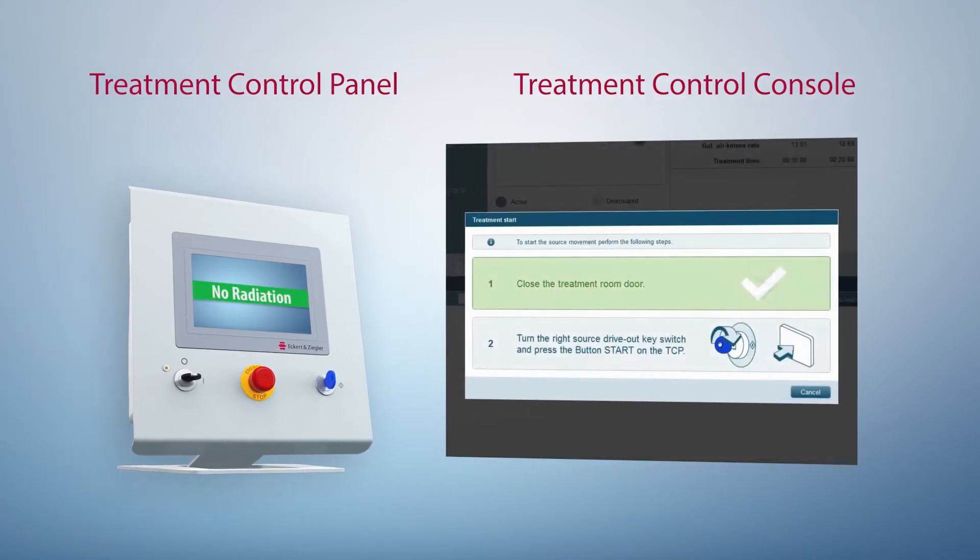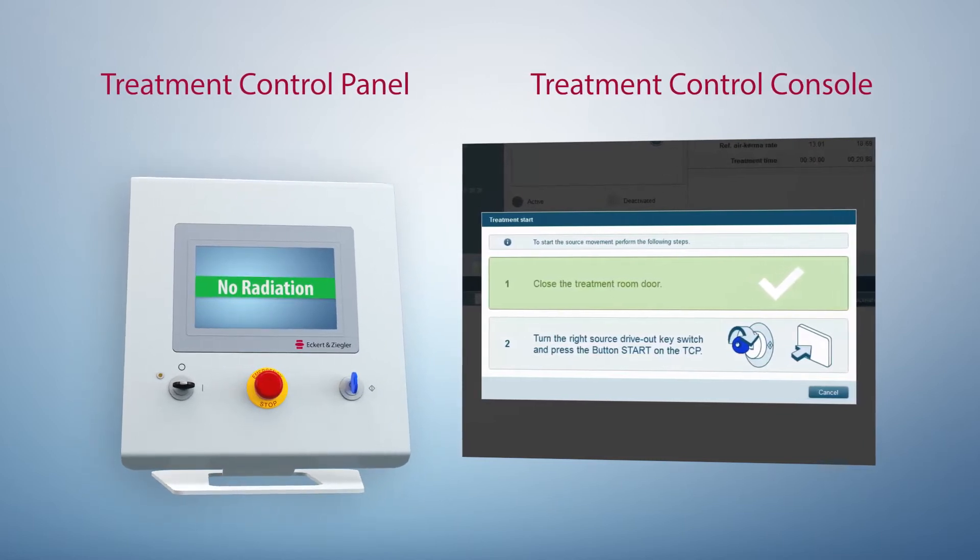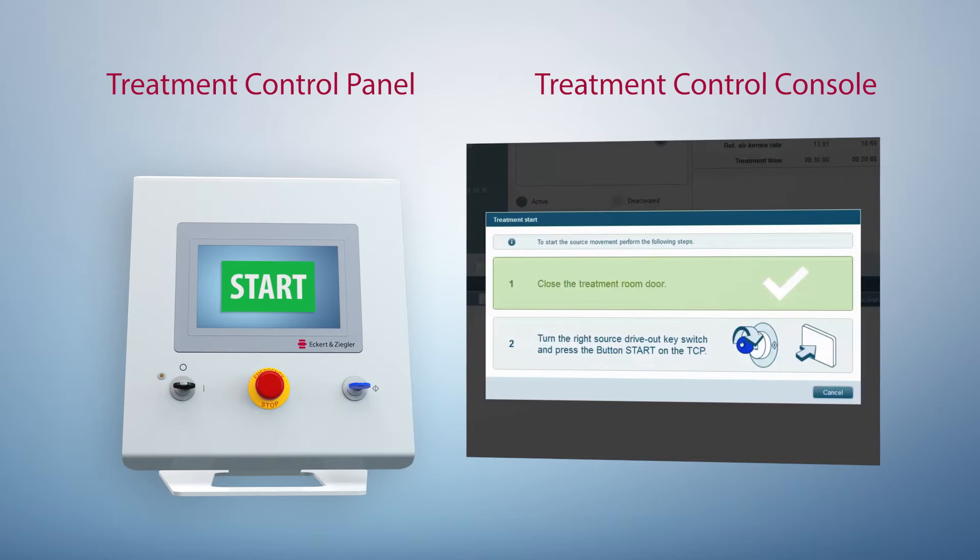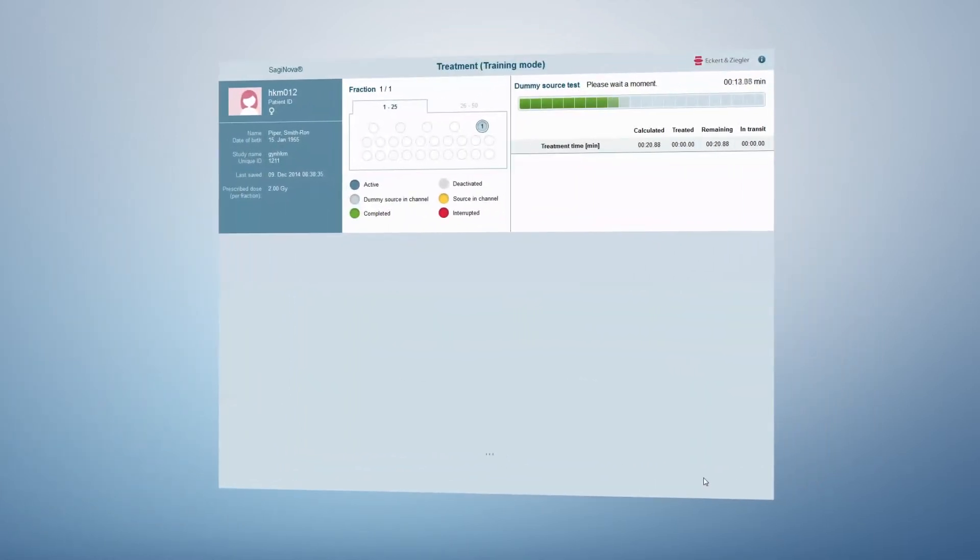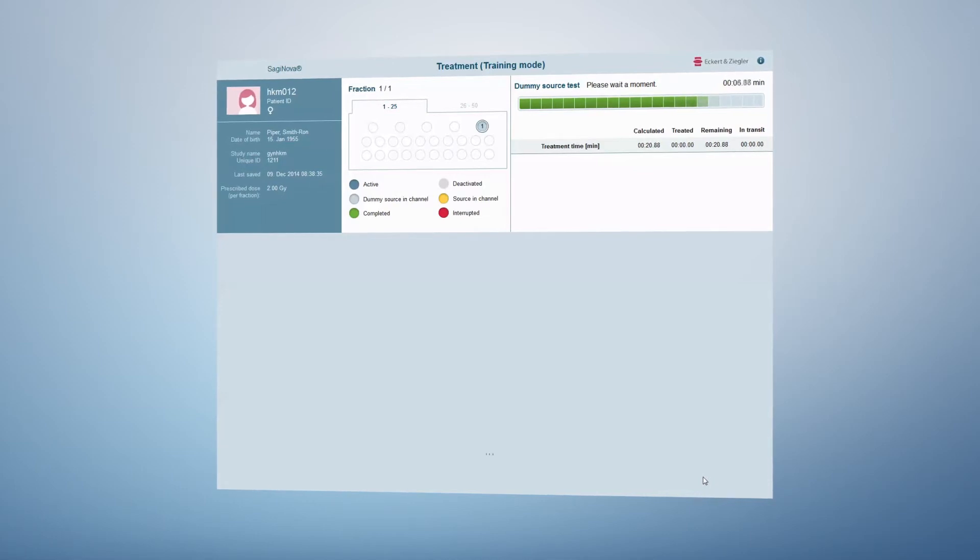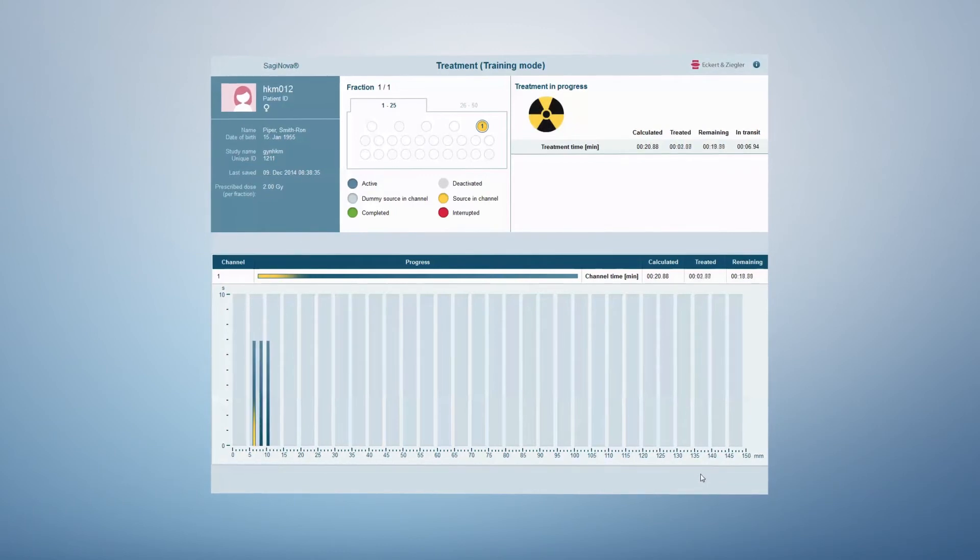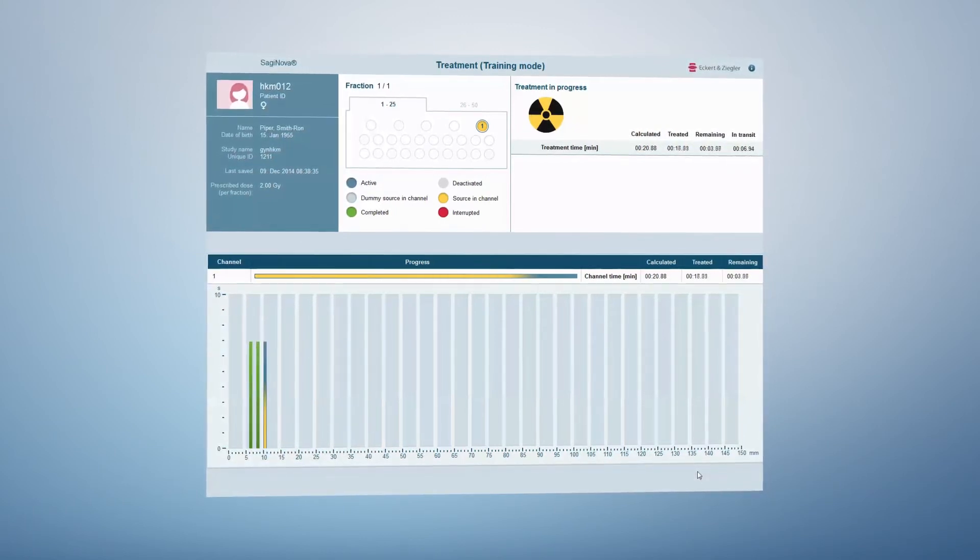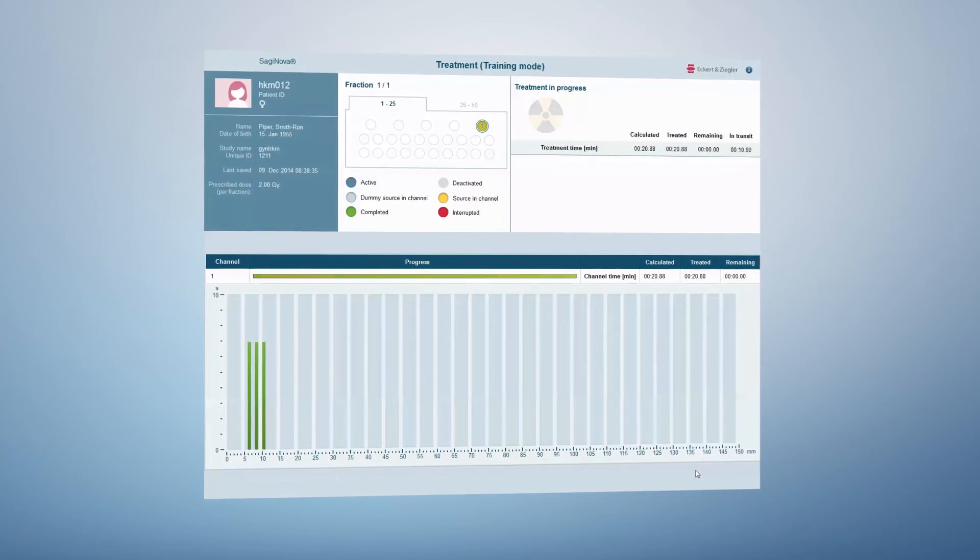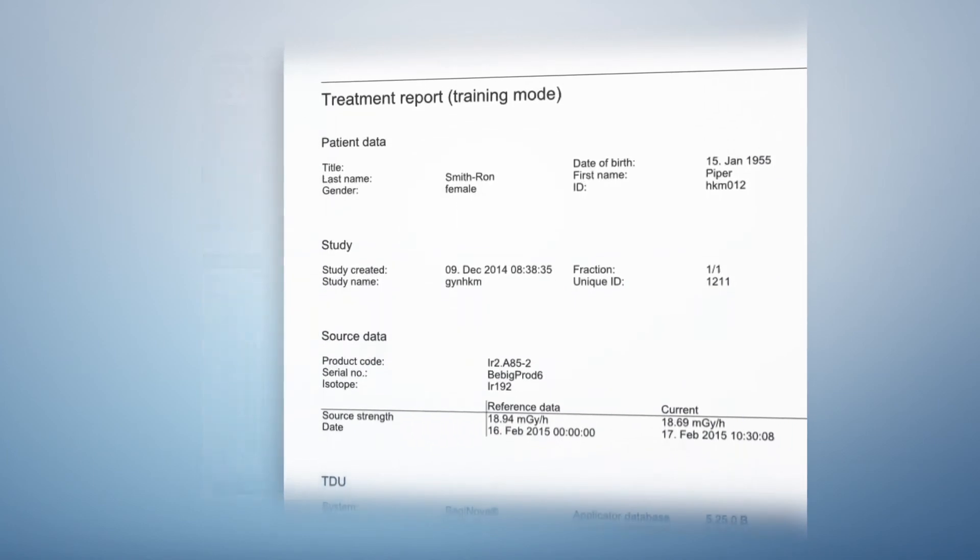The new Saginova graphical user interface was developed in cooperation with brachytherapy experts and usability engineers, leading to the development of the next level of smooth and efficient workflow guidance. The treatment status is continuously visualized in different colors. All important information is available at a glance. The corresponding report is just one click away.